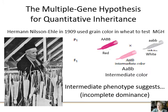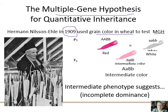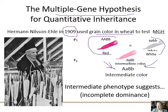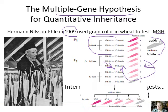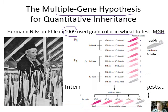Hermann Nilsson-Ehle tested this because the early 1900s was really when the continuous versus discrete debate came to a head. How could genes be particulate when we see continuous variation? He used grain color in wheat to test whether multiple genes could affect the same trait. He took true-breeding red and true-breeding white and bred them together to get an intermediate color — which everybody said was just blending — and then he self-fertilized this intermediate back on itself.